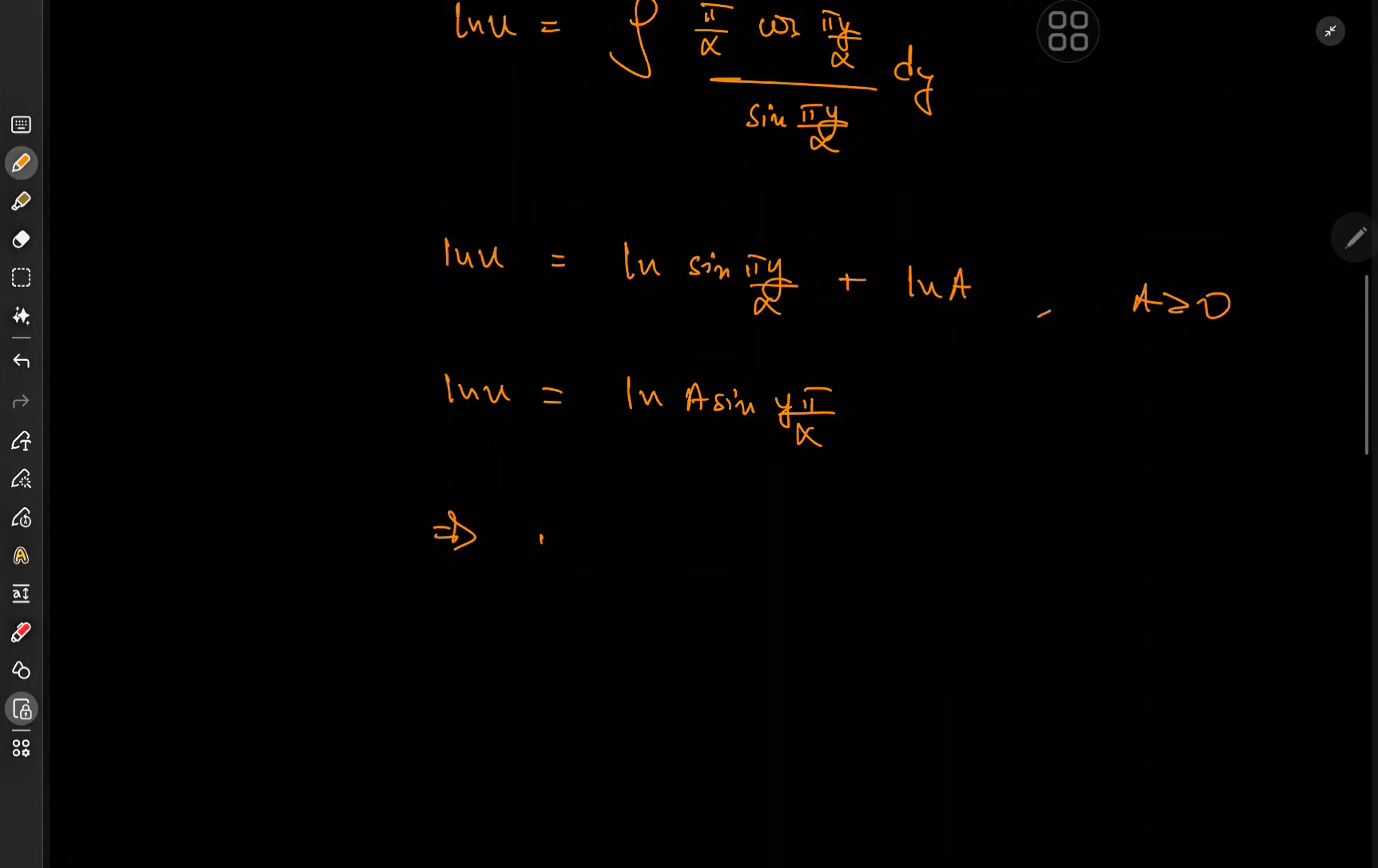So this is the log of the sine function plus a constant of integration, which I shall write as log of a, a being greater than zero. So that means I have log of a times the sine of y pi over alpha because of log properties. And this implies that u itself is equal to a times the sine of pi y over alpha because the logarithm is injective.